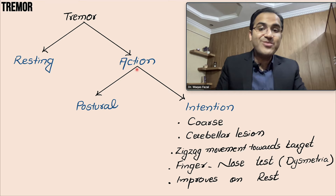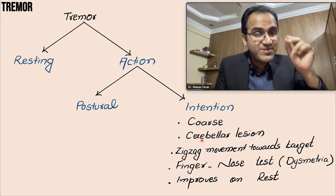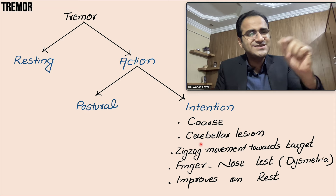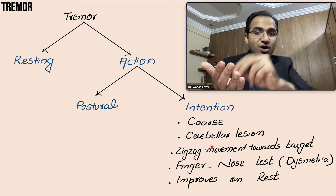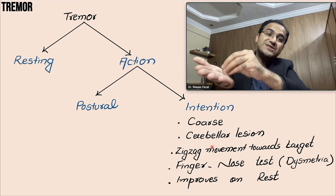Now coming to action tremor, which is divided into postural tremor and intention tremor. Intention tremor is a coarse tremor seen in cerebellar lesions — a very high-yield point. It is a coarse tremor in which you see a zigzag movement of the hands, and it worsens when the person reaches out for the target. If you ask the patient to pick something up, the tremor worsens as the patient reaches for the object.